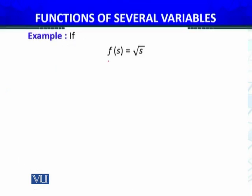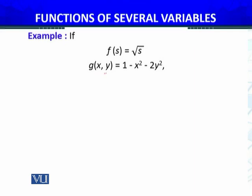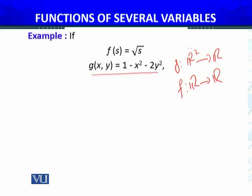Our f(s) is a real-valued function whose domain is ℝ. The second function we have is g(x, y), with domain ℝ². Comparing with the theorem, g is my vector-valued function and f is my real-valued function. You can see that g maps from ℝ².